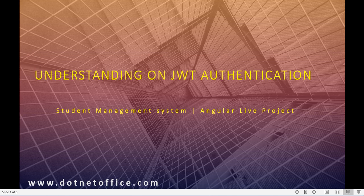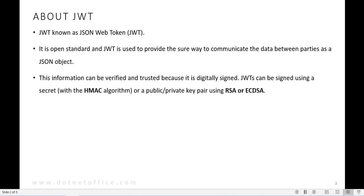JWT is basically known as JSON Web Token. As per the definition, it is an open standard used to provide a secure way to communicate data between two parties as a JSON object. The two parties means like a server and a client — it passes data between them using JSON format.